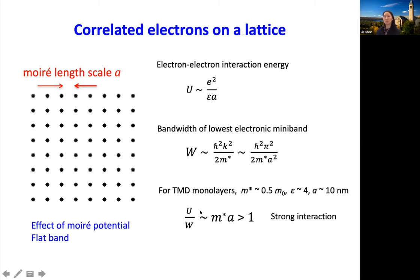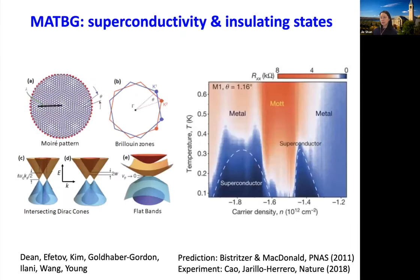Furthermore, if you have very strong moiré potential, which can localize the carriers a little bit better to get into the flat band regime, then you can further enhance this ratio. That's the difference between the 2D electron gas we just saw in the last talk, and what I'm going to talk about — 2D electrons on a moiré superlattice. This scheme of engineering correlation using moiré superlattices of 2D van der Waals material has been first realized in the graphene system.